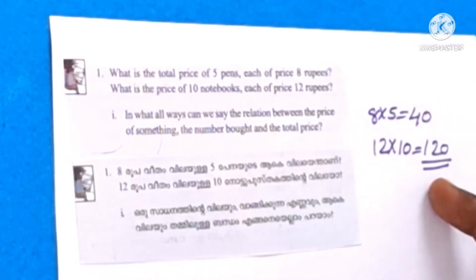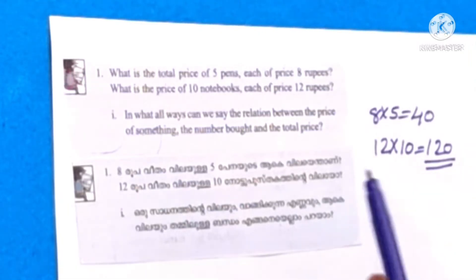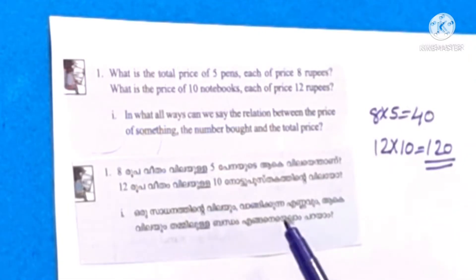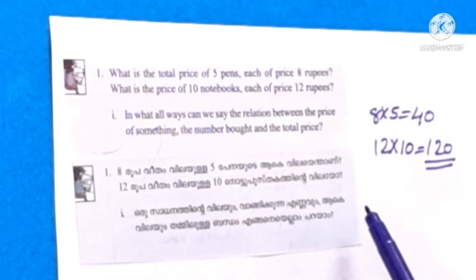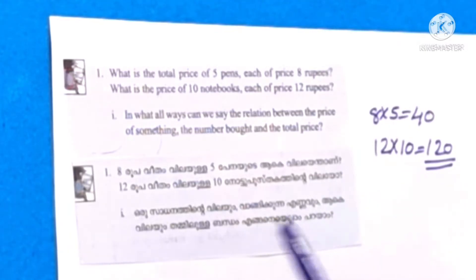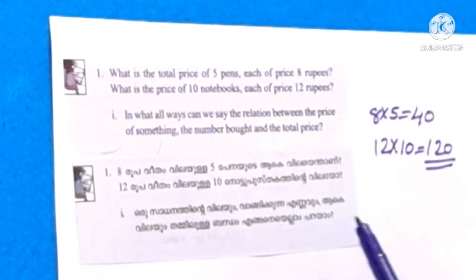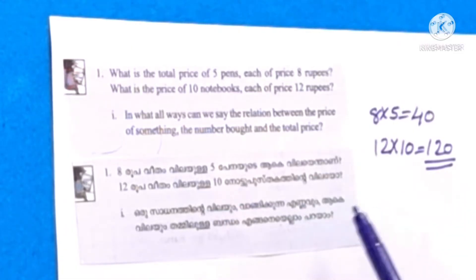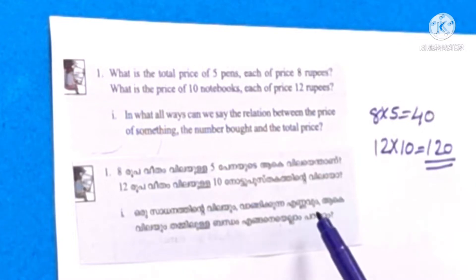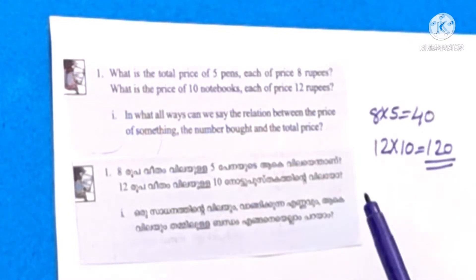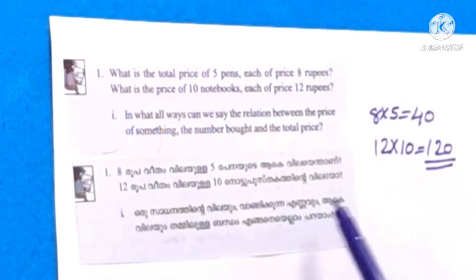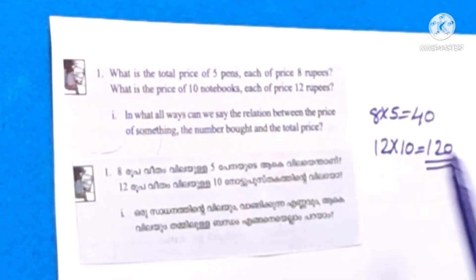The price of 5 pens at Rs. 8 each. In what way can we say the relation between the price of something, the number of items, and the total price?